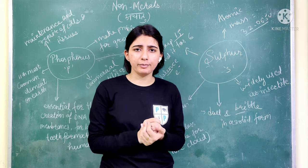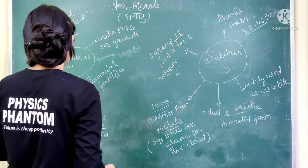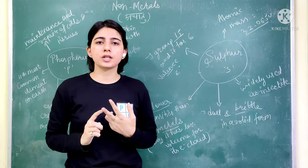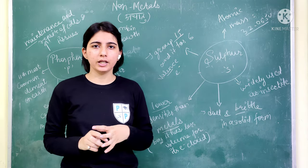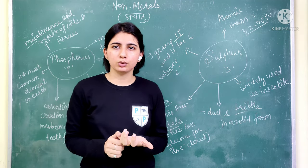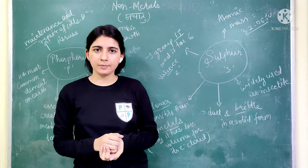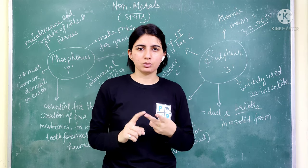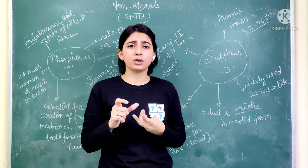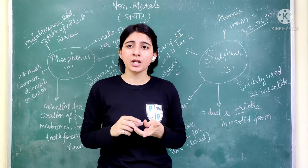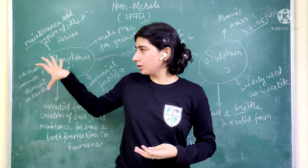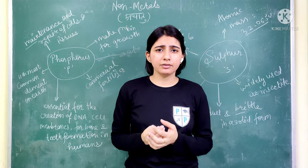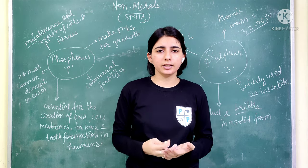The next important non-metal is phosphorus. The phosphorus symbol is P and its atomic number is 15. Phosphorus exists in two forms in nature: one is white phosphorus and one is red phosphorus — this is one of the most important exam questions. Phosphorus is very reactive.